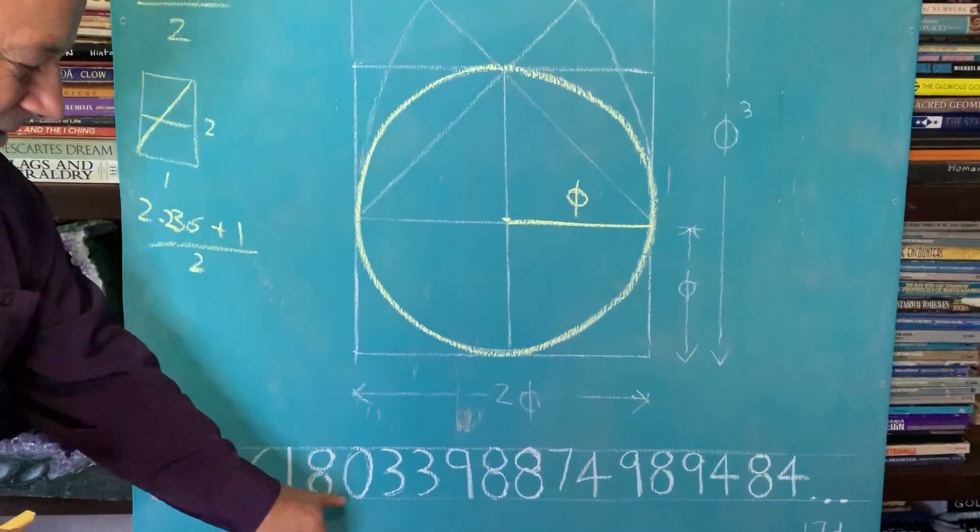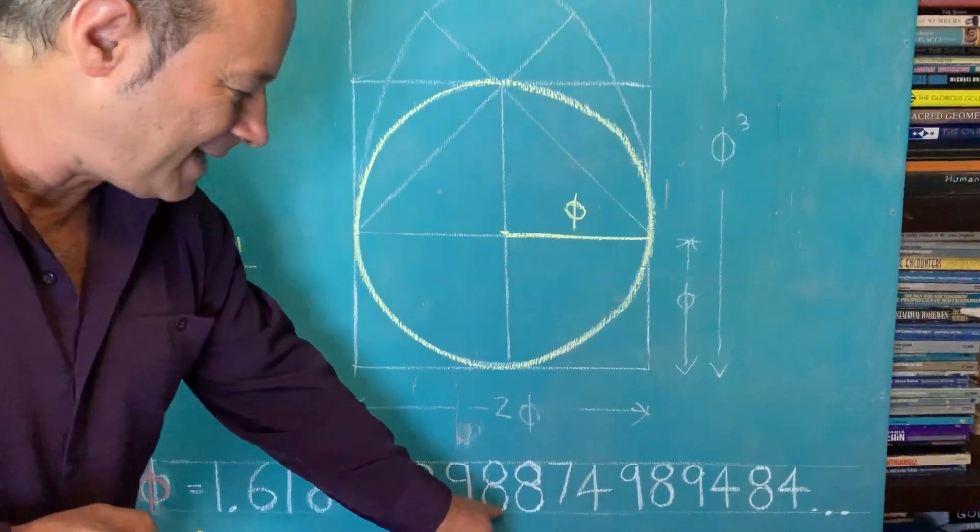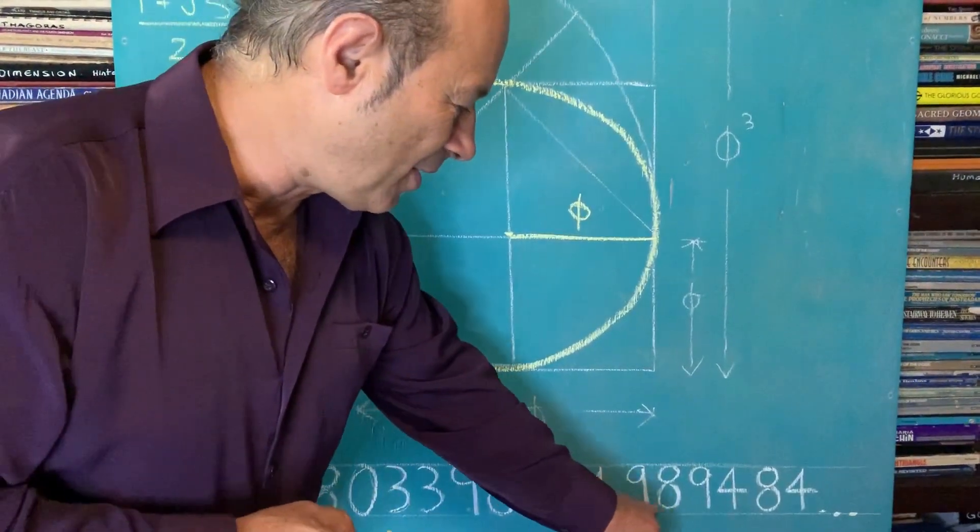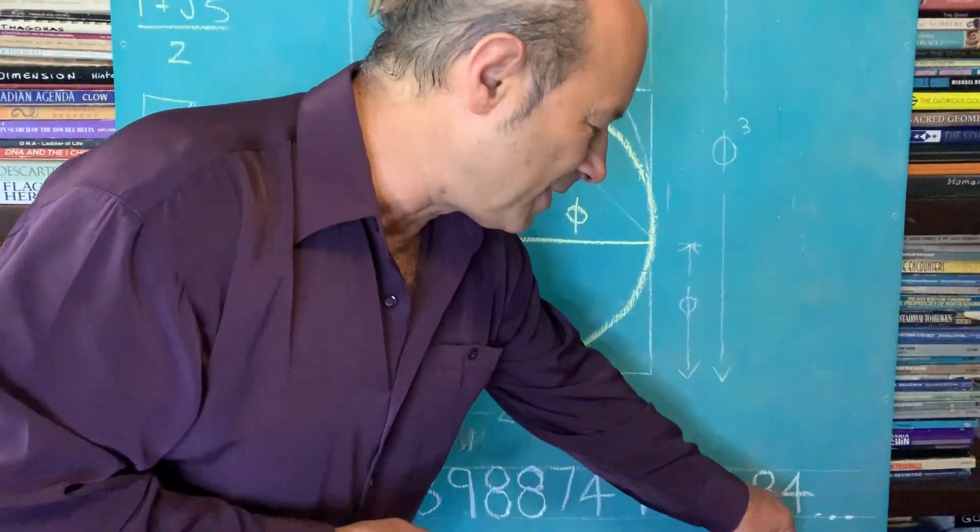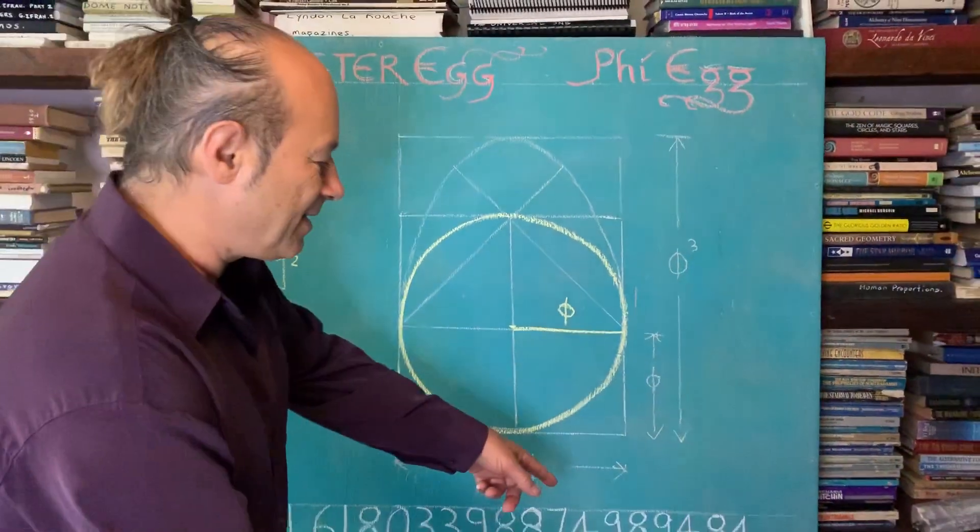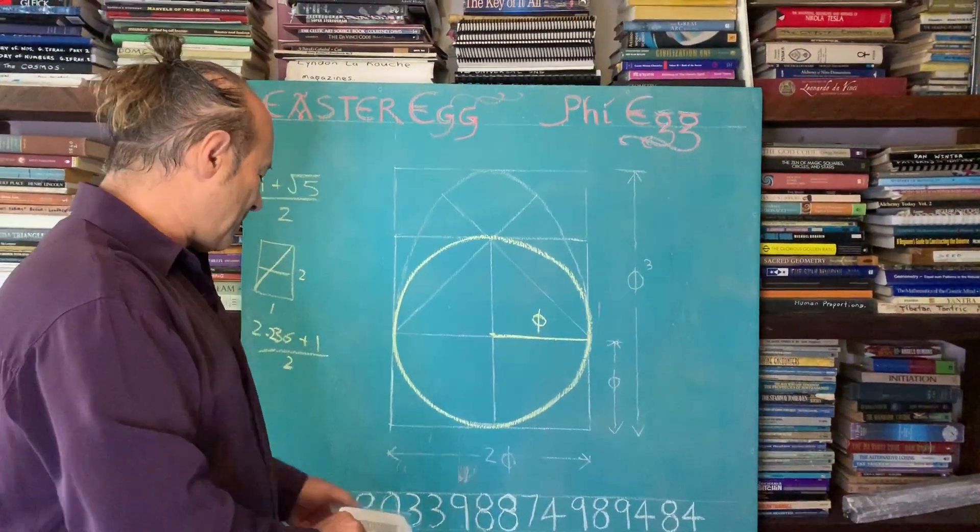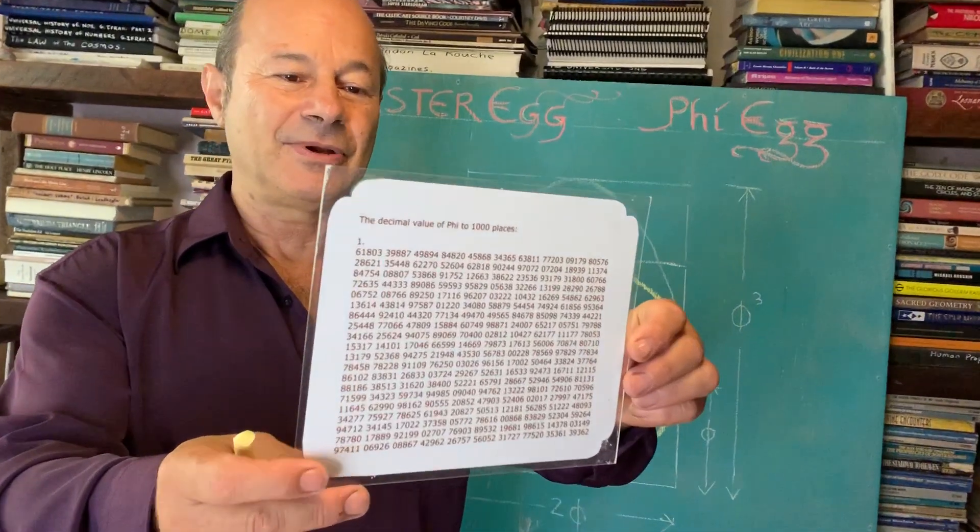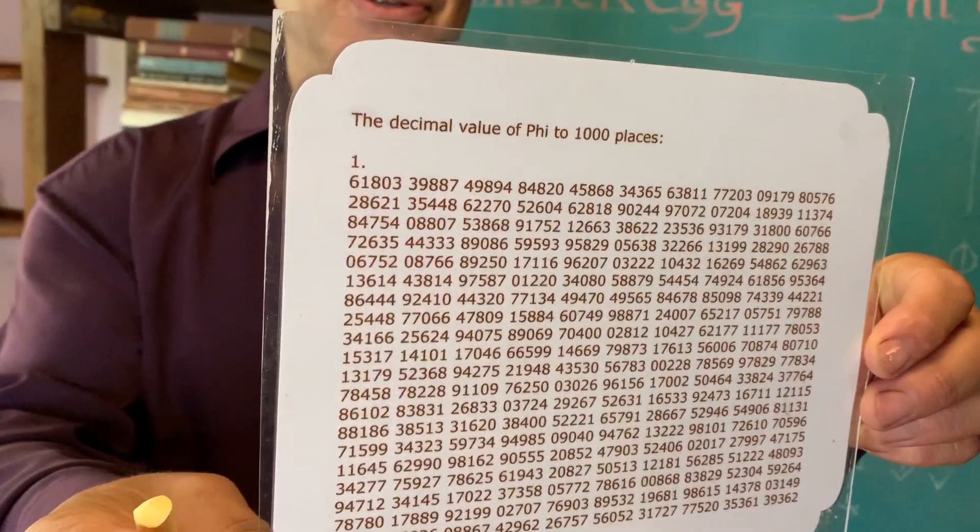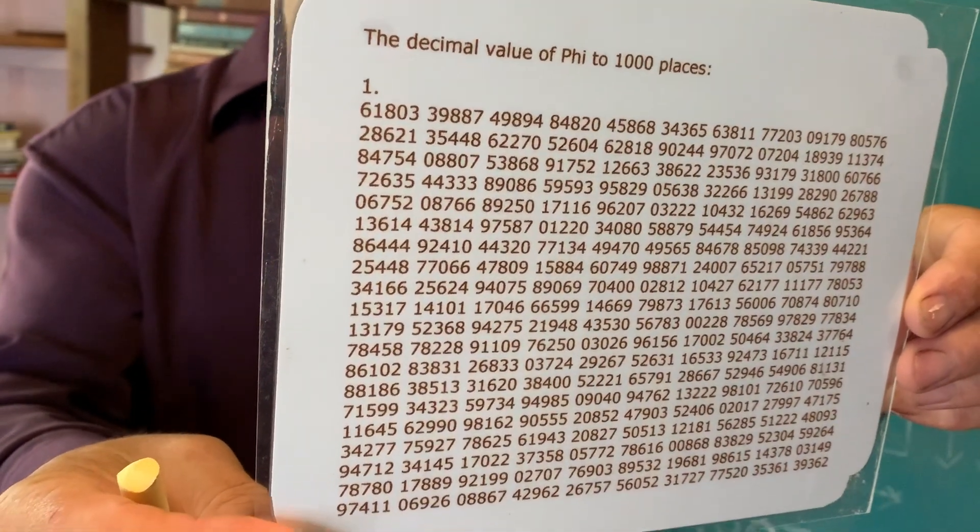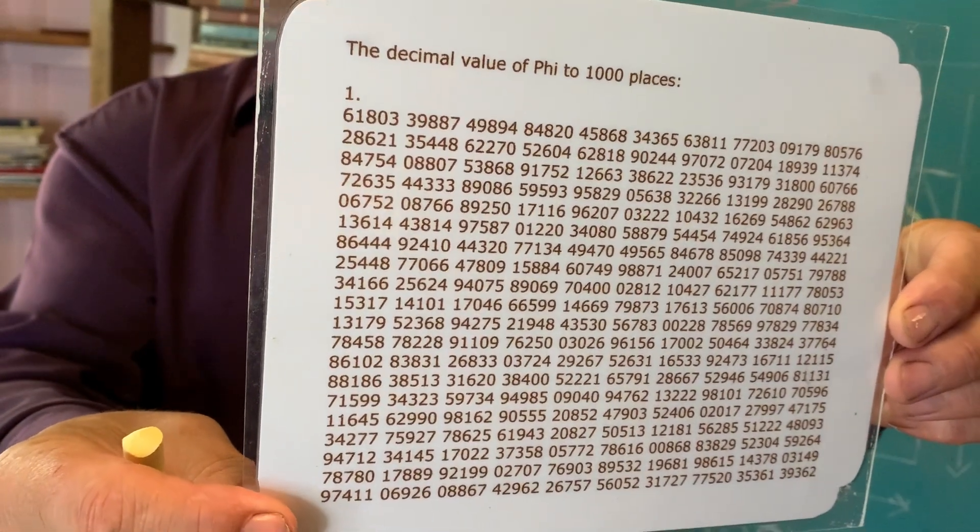We end up with a value for Phi called 1.618033988749894848 and it goes to infinity. That there was 17 decimal places. But if you were to look at Phi on a chart taken to 1,000 decimal places, you can see that this is a very special number.